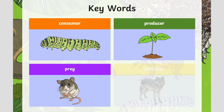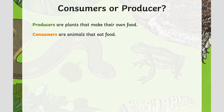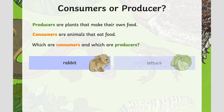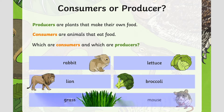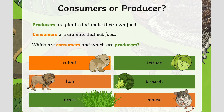Here are the four key words children should be aware of when studying food chains. All food chains start with a producer, which are plants which make their own food by using light from the sun. Consumers are animals which either eat plants or other animals. If an animal is eaten by another it is prey, whereas the animal that eats it is a predator.